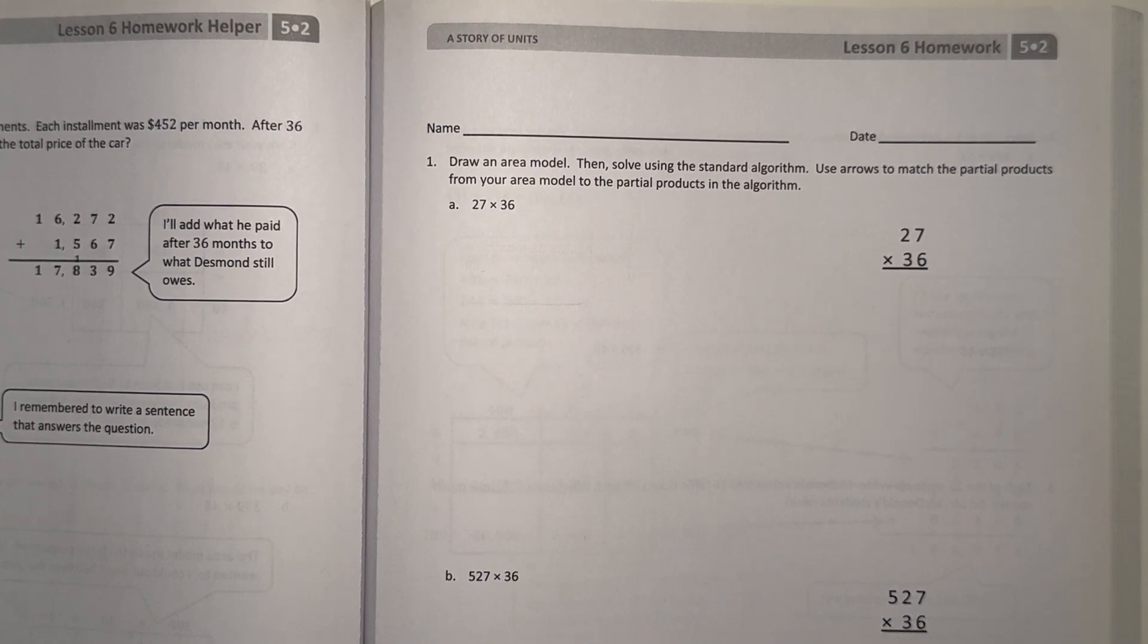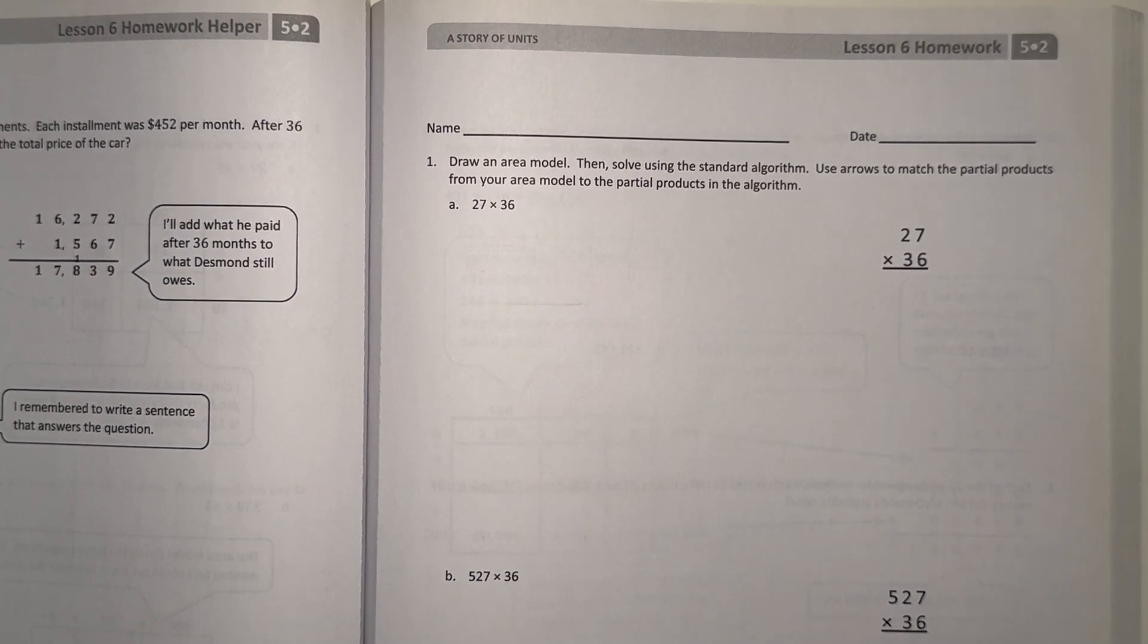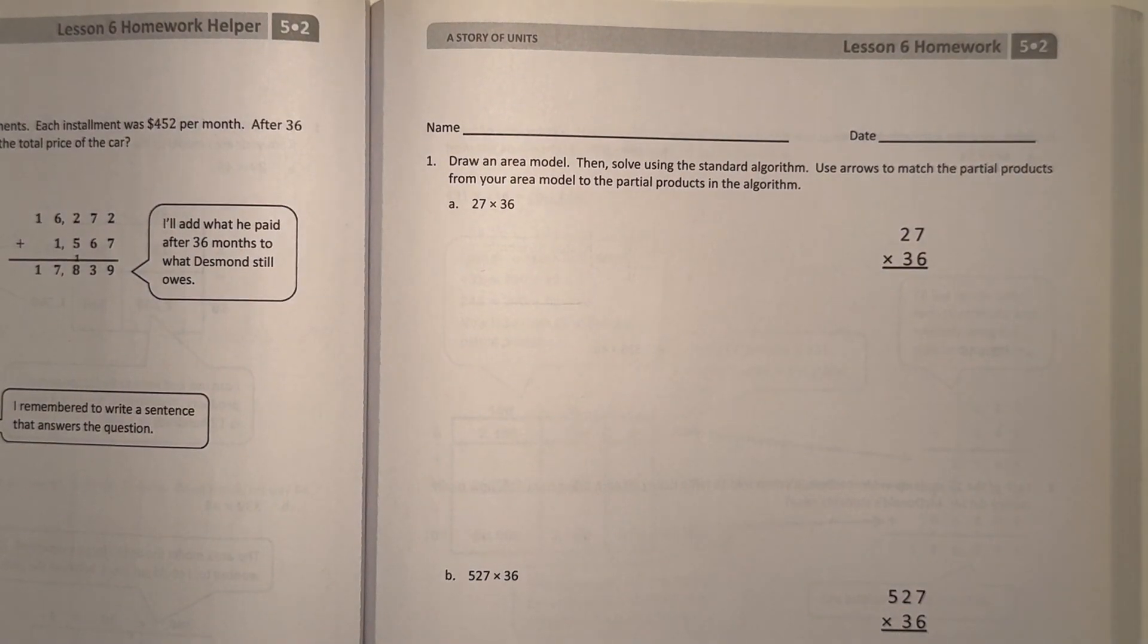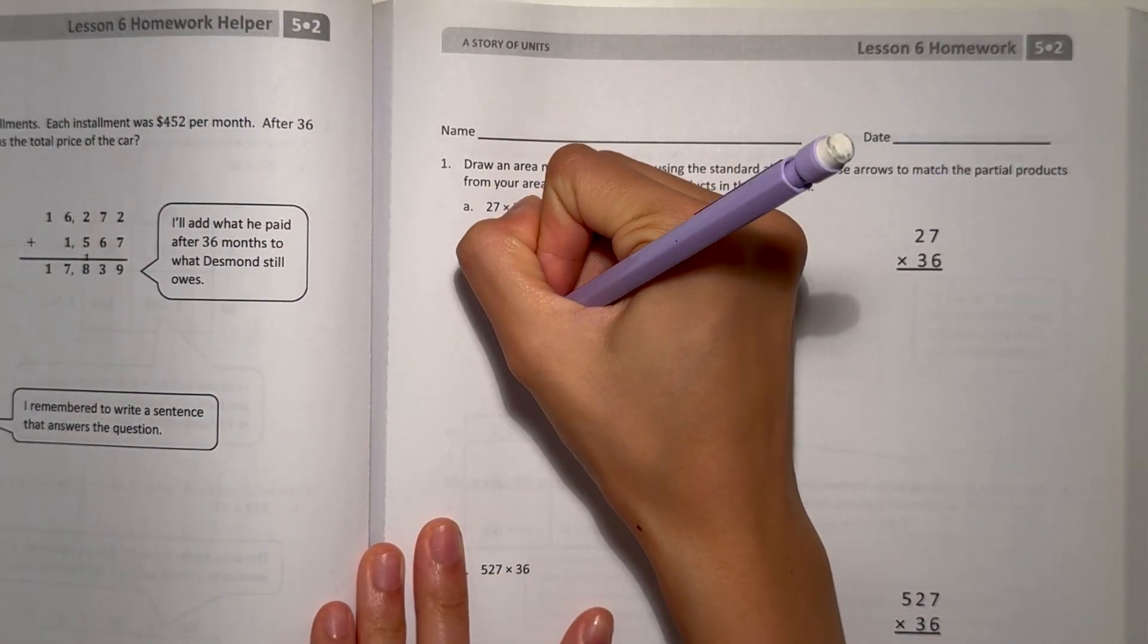So an area model. In the previous lesson, we were starting to use area models to help us with standard algorithms. So A, we have 27 times 36. So our area model would look something like this.